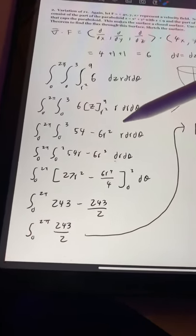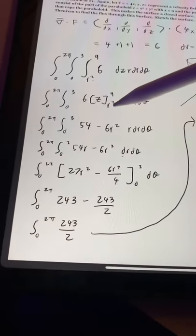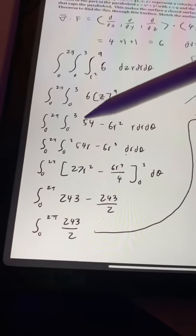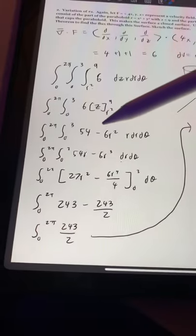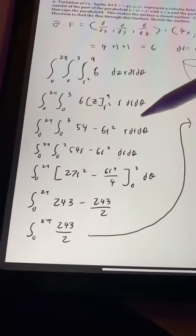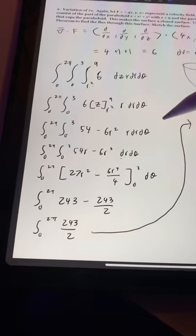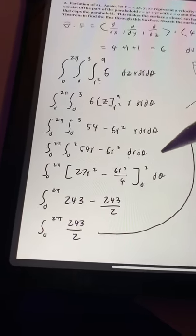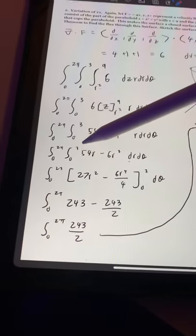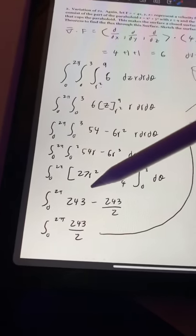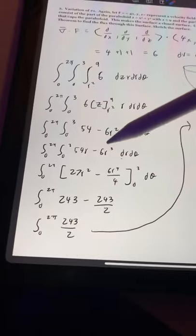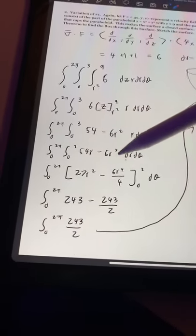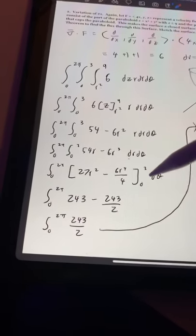Then I distributed the r to get the integral from 0 to 2π, 0 to 3, of 54r minus 6r cubed dr dθ. And then I integrated with respect to r to get 27r squared minus 6r to the 4th divided by 4, with r being 0 to 3.